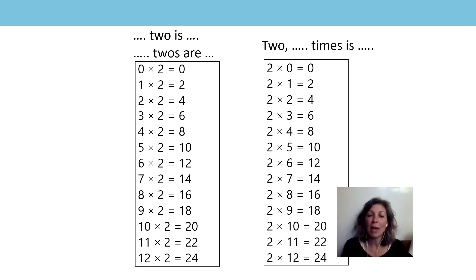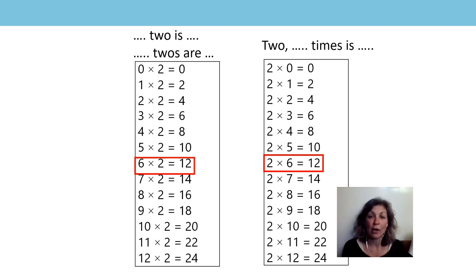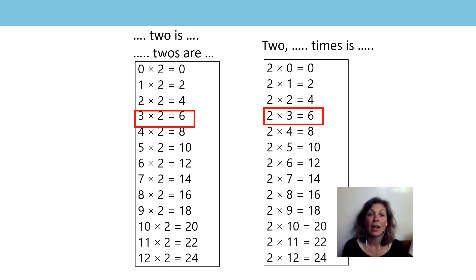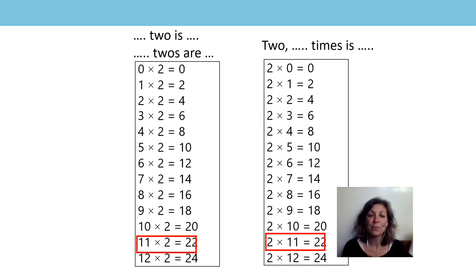We're going to practice saying pairs of equations now using our stem sentences. Are you ready? Your turn first. 6 twos are 12. 2, 6 times is 12. 3 twos are 6. 2, 3 times is 6. And our last one: 11 twos are 22. 2, 11 times is 22.